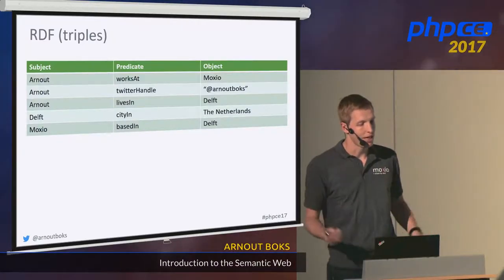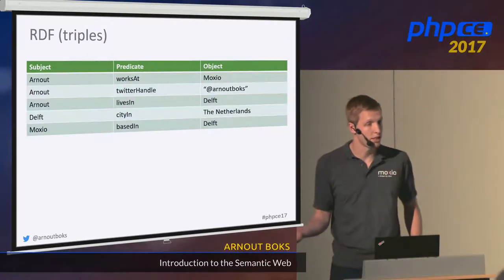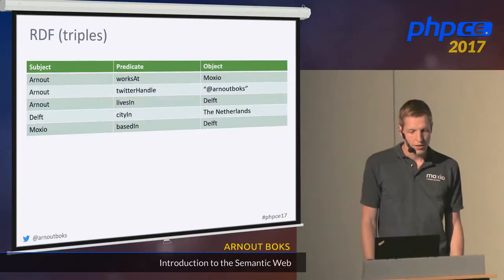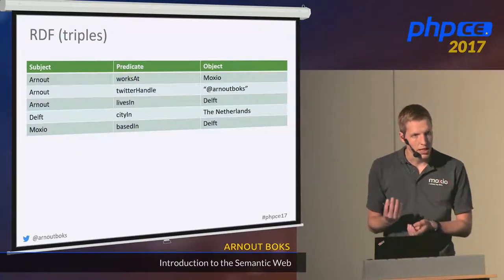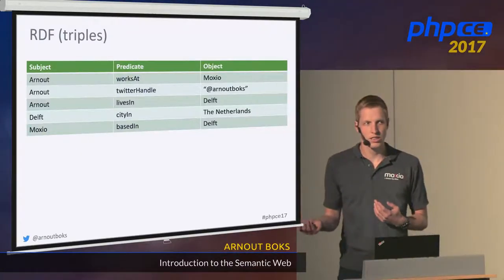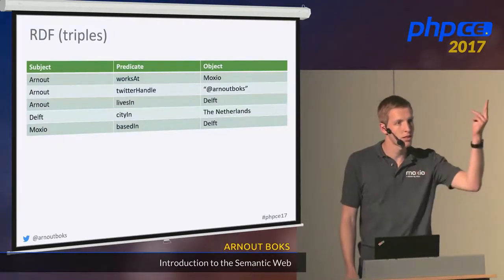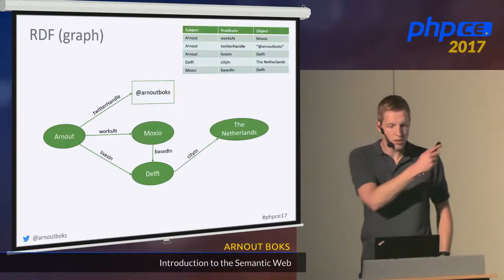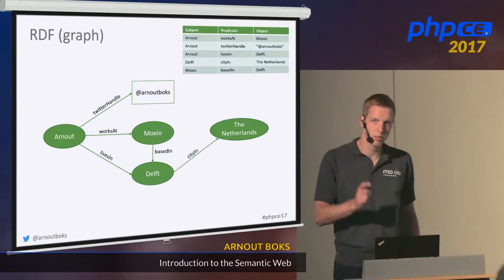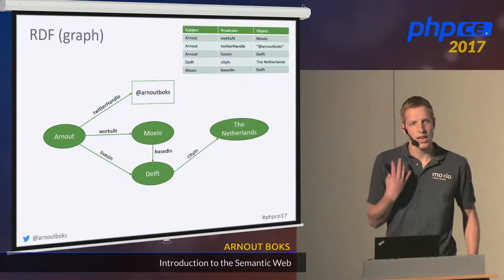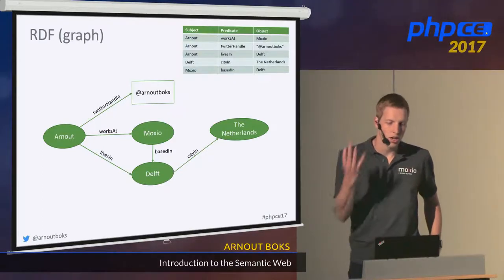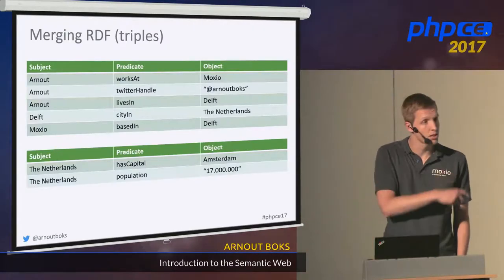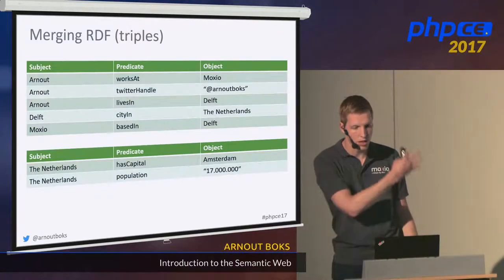I can add more data: my Twitter handle, that I live in Delft — which is a city in the Netherlands — and that the company I work for is also based in Delft. Some values have quotes around them because they are literal values, as opposed to things with an identity. Compare it to value objects and entities when doing DDD. The things with quotes are just values with no identity; other things point to actual objects with an identity. You can already see that some subjects and objects occur multiple times, and that allows us to generate another representation of the same data — namely as a graph — where subjects and objects become nodes, and predicates become edges.